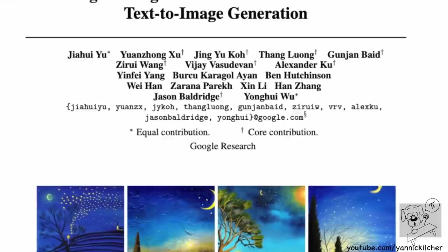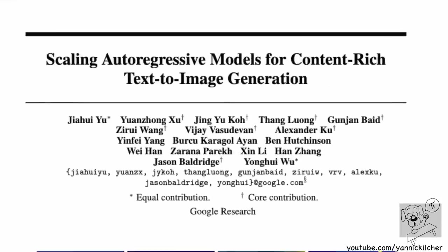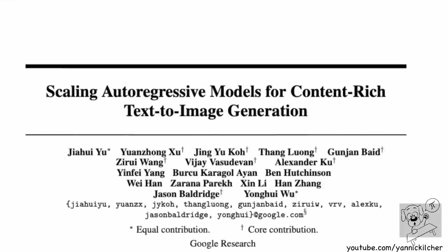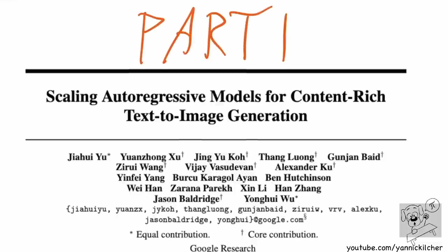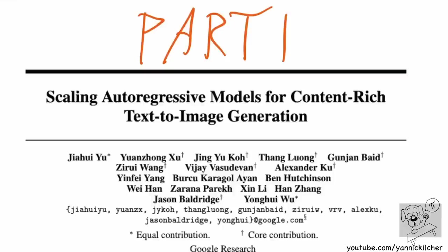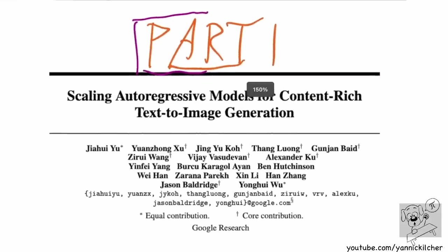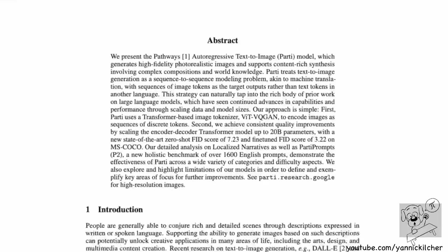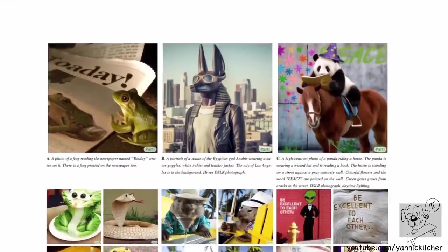This is by a group of researchers out of Google Research, and it's a parallel work to the Imagen model. The paper is called 'Scaling Autoregressive Models for Content-Rich Text-to-Image Generation,' and the model is called PARTI. It could be pronounced 'party,' 'partai,' or otherwise — let's call it party. PARTI generates images from text, but unlike Imagen, which is a diffusion model, it is an autoregressive model.